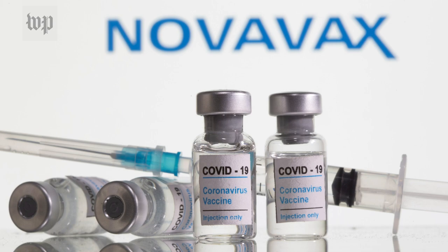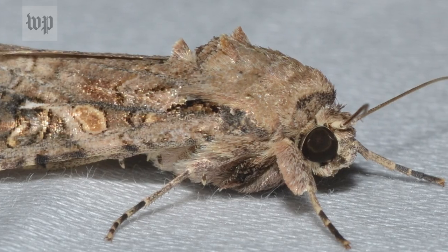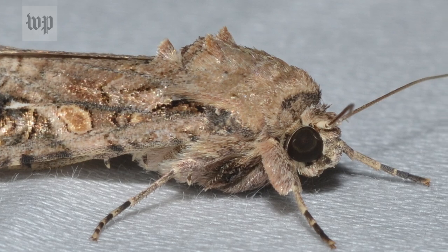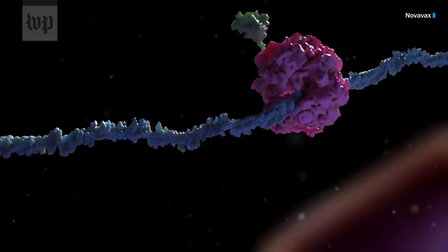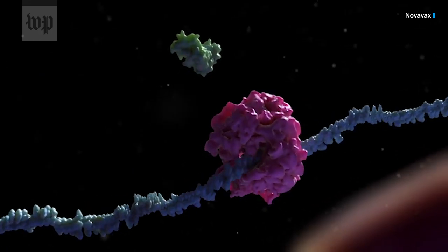The Maryland Biotech Company used insect cells to produce the coronavirus' unique spike protein, which can then be introduced to patients to prime their immune systems.